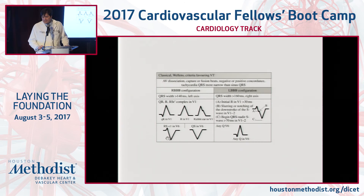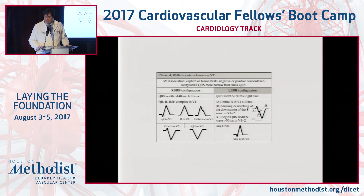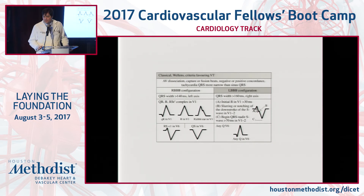In V6, a small R with a deep S, or a QS pattern, is suggestive of VT. With left bundle morphology, you allow a slightly longer QRS to be considered VT, and right axis deviation supports this. If the first R-wave is more than 30 milliseconds, it's suspicious for VT. The presence of a notch, the interval from peak of R to bottom of S greater than 70 milliseconds, and combined RS interval above 100 milliseconds are all suggestive. Any presence of a Q-wave in V6 is also suggestive of VT.